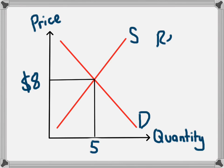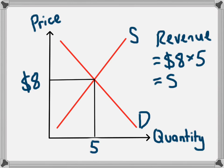Now we would know that the revenue, the money that is earned by a business in this case, would be equal to $8 times 5 products. And that means the amount of money they receive from selling their products equals $40.